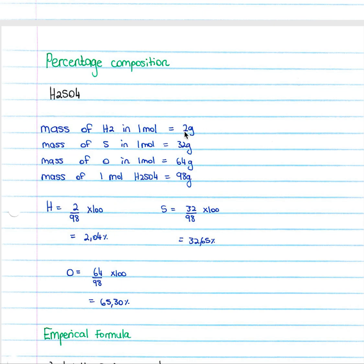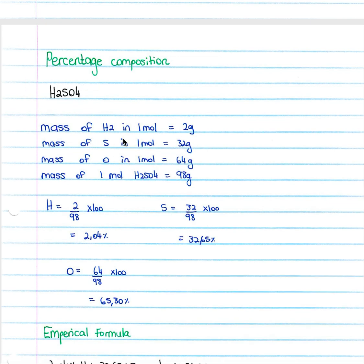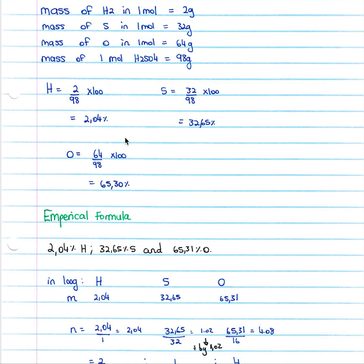Then you simply divide your mass of each substance by your total mass and you'll get a percentage of the composition of that particular element in your H2SO4. When you look at your empirical formula...